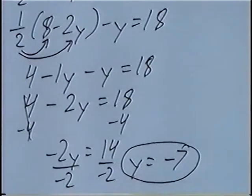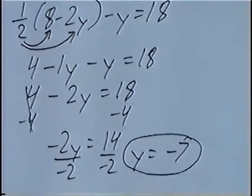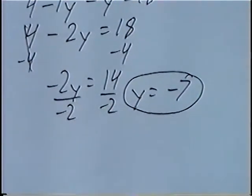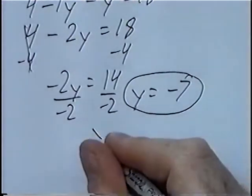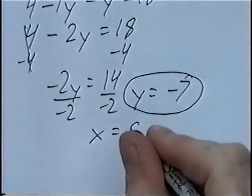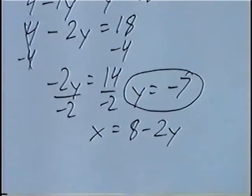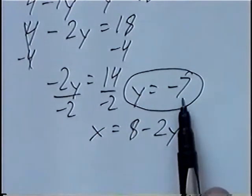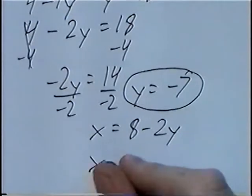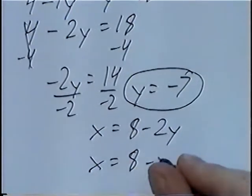To get our second answer, we know what y is equal to and we want to find out what x is. Looking back at the original question, the first equation was x equals 8 minus 2y. Now we know y is equal to negative 7, so we can plug negative 7 in for y and solve for x.